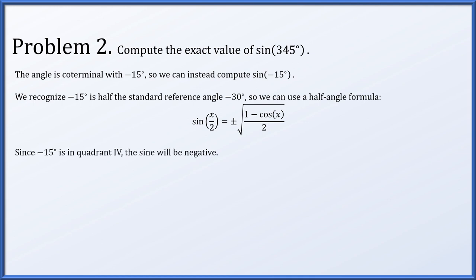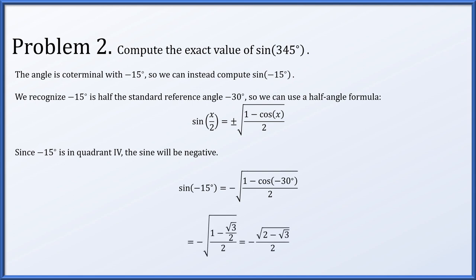Negative 15 degrees is in quadrant 4, so the sine will be negative, so we take the negative square root. Sine of negative 15 degrees is minus the square root of 1 minus the cosine of negative 30 degrees, all over 2. The cosine of negative 30 degrees is root 3 over 2, and this simplifies down to negative square root of 2 minus root 3, all over 2.